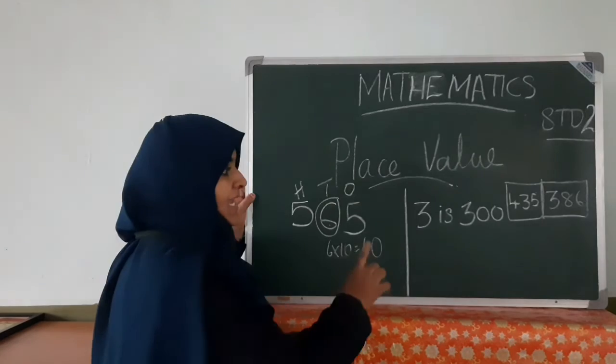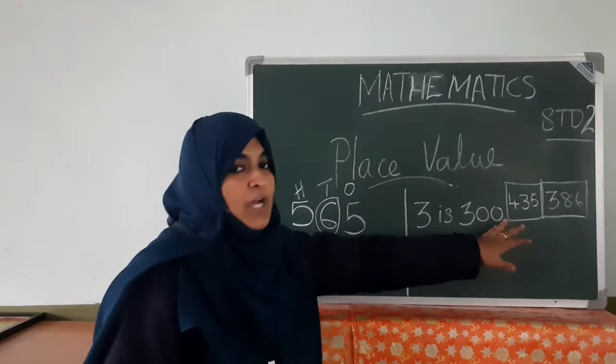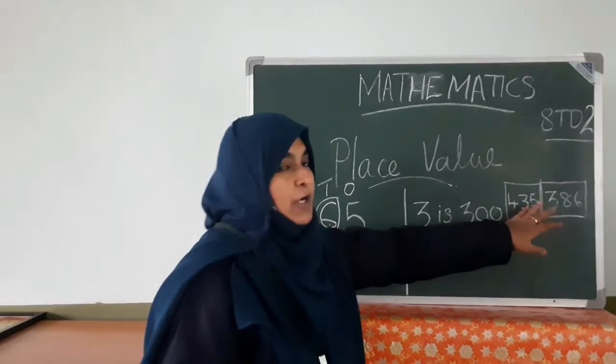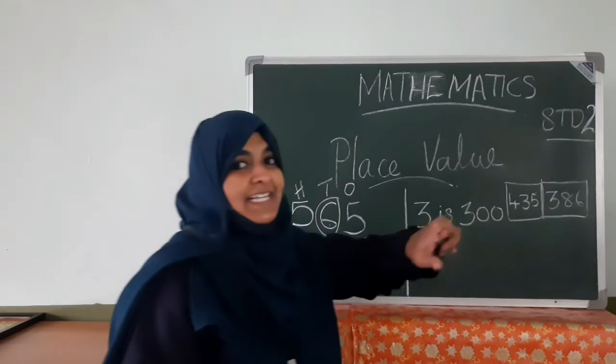Three is three hundred. In which number? Three is in hundred place? Four hundred thirty-five or three hundred eighty-six?